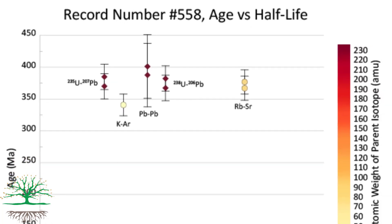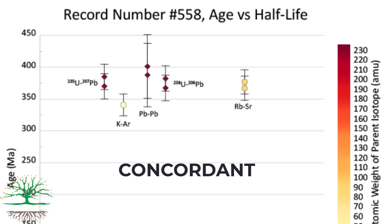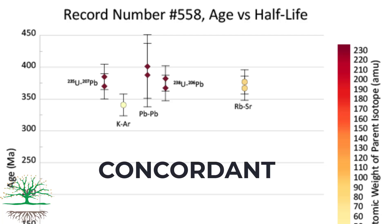The most important axis here is the y-axis — it shows the recorded age for each isotope pair or system in hundreds of millions of years. This record is what we would call mostly concordant: although there are some variances in the different ages, the overall recorded ages fall within all of the error bars.